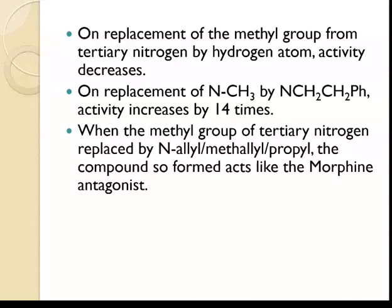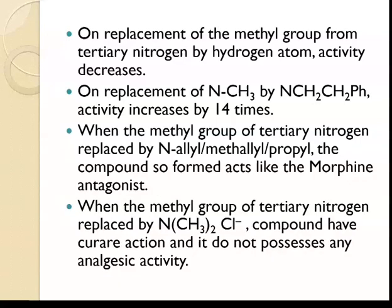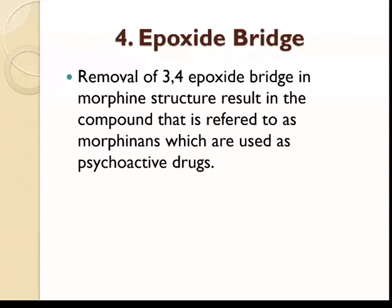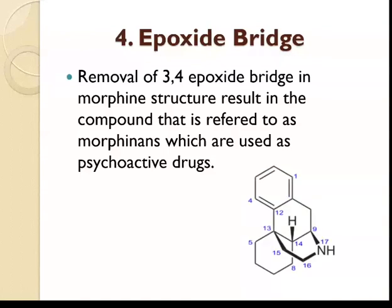When the methyl group of tertiary nitrogen is replaced by N-allyl, methyl-allyl, or propyl, the compounds formed act as morphine antagonists. When the methyl group of tertiary nitrogen is replaced by N-CH2Cl, the compound has curare-like action and does not possess any analgesic activity. The removal of the 3,4-epoxide bridge in the morphine structure results in a compound referred to as normorphine, which is used as a psychoactive drug.